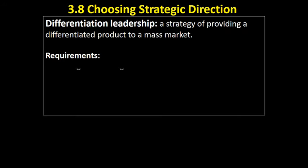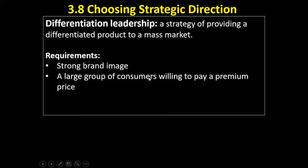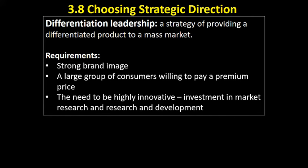So what does the model require? Well, we're going to need a strong brand image. All of those businesses we've talked about have strong brand images, because we're trying to sell a product to a mass market but target premium customers within that. So we need a large group of consumers willing to pay a premium price for this strategy to be successful. The company also has to be highly innovative — we'll need to invest huge amounts in market research and research and development in order to know what customers want and provide it. We want to be innovative and creative, and it can be very expensive to do so.